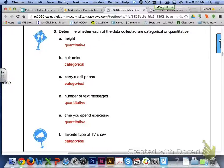For letter A, height is going to be quantitative. B, hair color is categorical. C, carry a cell phone is categorical. D, number of text messages is quantitative. E, time you spend exercising is quantitative. And F, favorite type of TV show is categorical. Remember, when we're looking at categorical data, we are going to be putting our data into a different group or category. And when we look at quantitative data, we are going to be looking at a numerical scale.